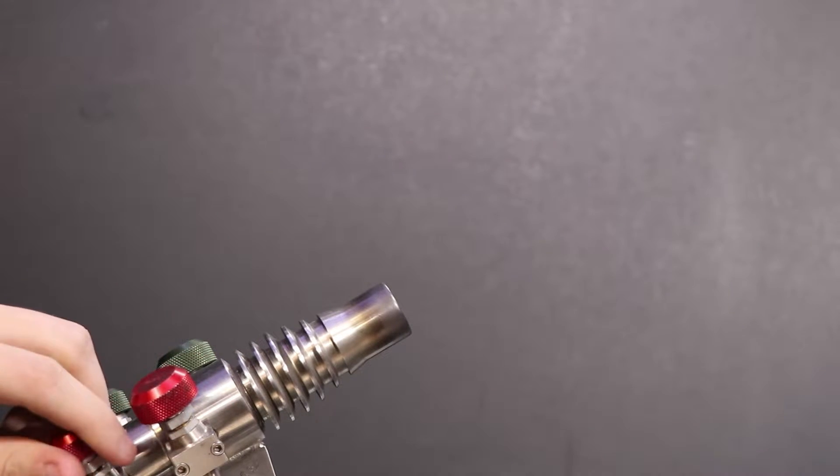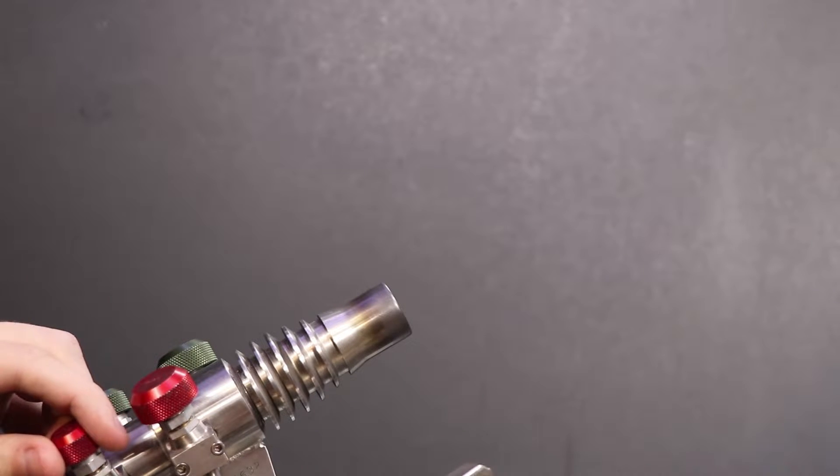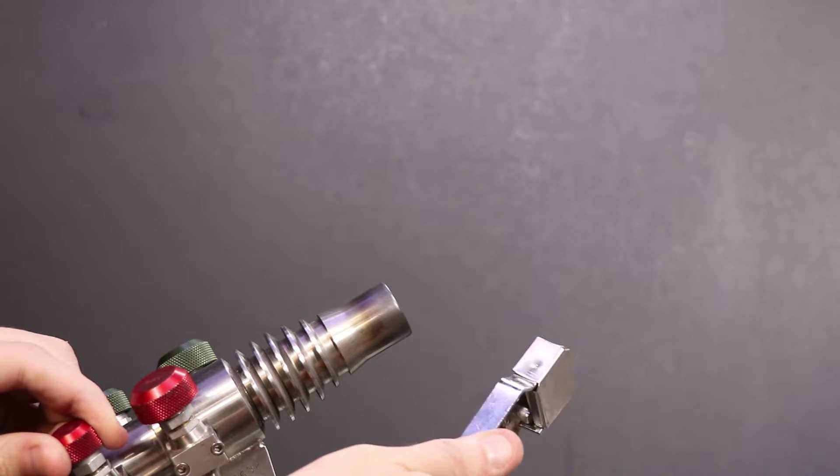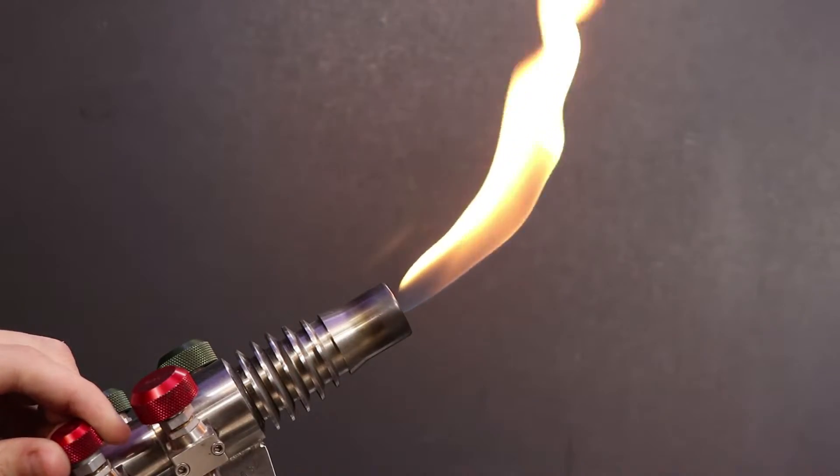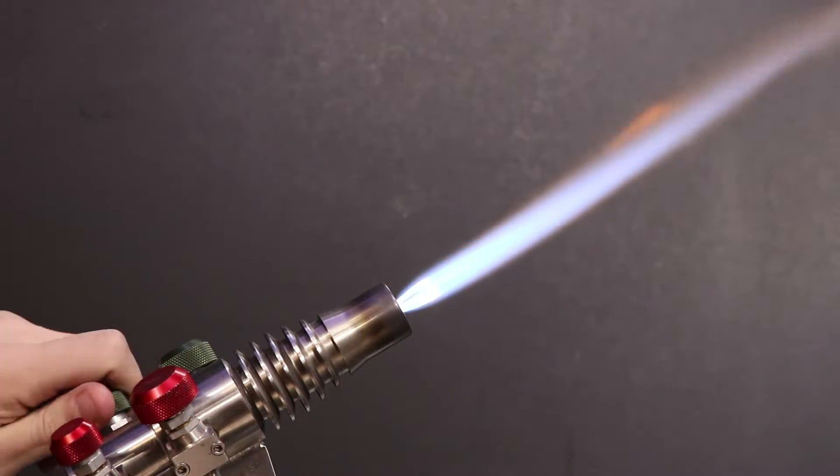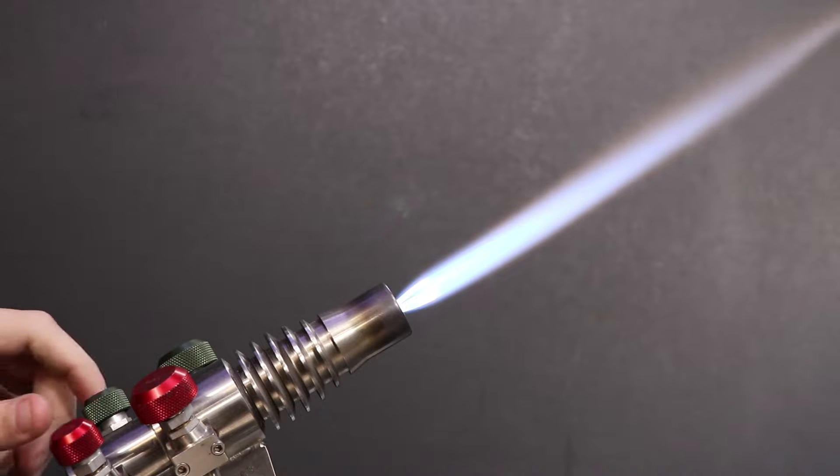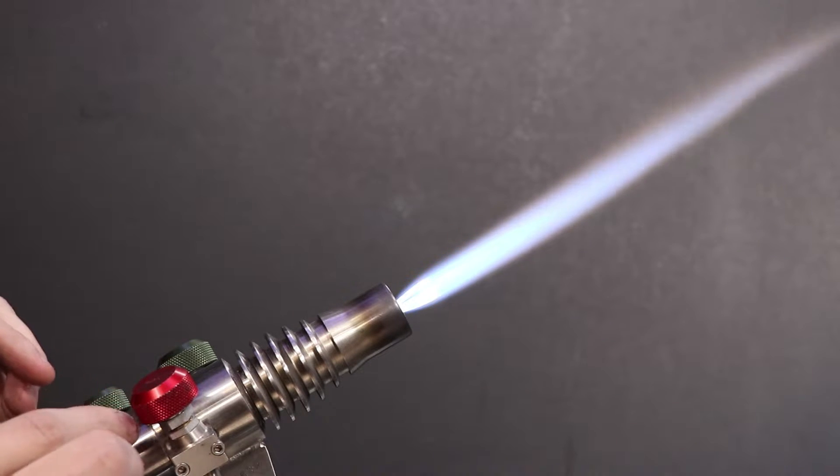I'll start off by making sure all these knobs are closed and then I'm going to open up the propane on my first stage. I'll turn my flame up a little bit and then add the oxygen. The flame should immediately turn blue and then I'll adjust my propane and oxygen for a neutral flame.